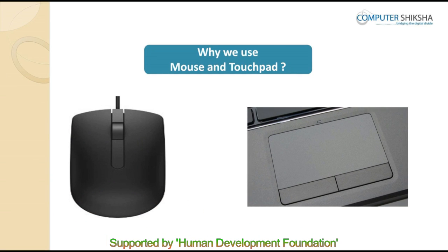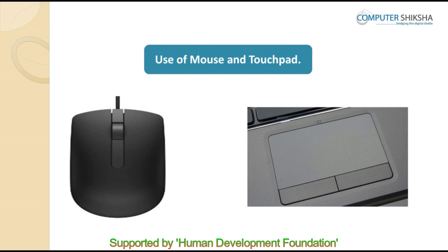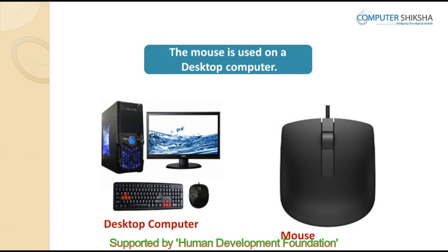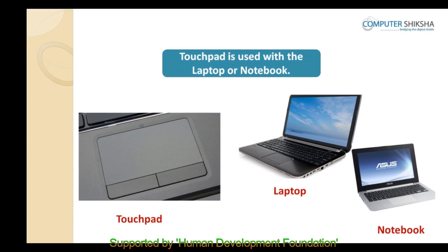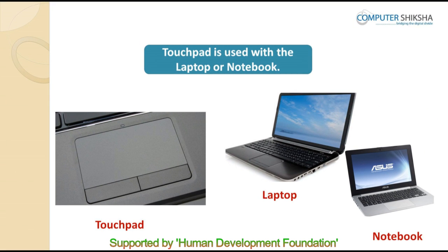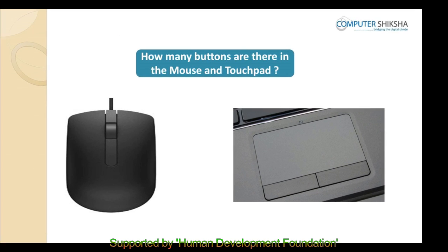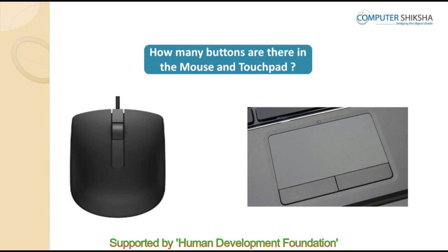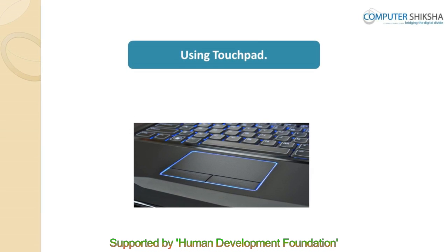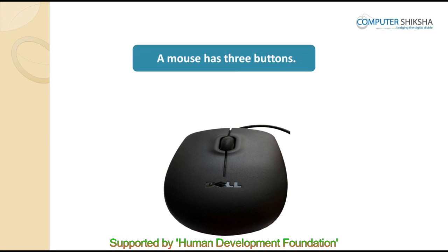Why do we use the touchpad or mouse? The touchpad or mouse is used to move the pointer from one place to another on the screen. The mouse is used on a desktop computer, while the touchpad is used with a laptop or notebook. How many buttons are there on the touchpad or the mouse? The touchpad has two buttons, while the mouse has three buttons.